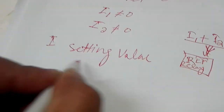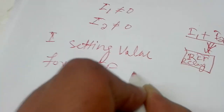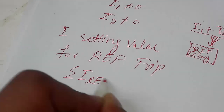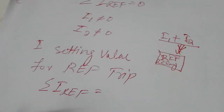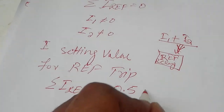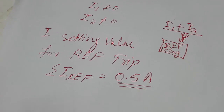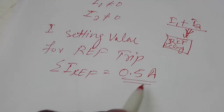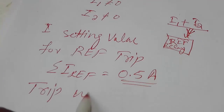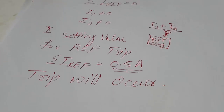The setting value for the REF trip: the summation of IREF is set to 0.5 ampere. So when we inject current and this summation reaches 0.5 ampere, the relay will pick up and the trip will occur. Now we will show this condition practically from the relay.